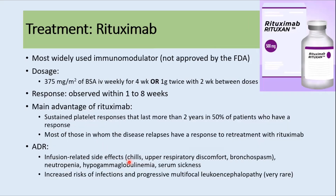Rituximab is the most widely used immunomodulator for second-line ITP treatment, though it is not FDA-approved for this indication. The dose is 375 mg/m² weekly for four weeks, or 1 gram twice with two weeks between doses. Response is usually observed within one to eight weeks, and a key advantage is that patients can have sustained response for more than two years. If a patient relapses on rituximab, retreatment usually produces a response again. Side effects include infusion-related reactions like chills or bronchospasm, neutropenia, serum sickness, increased risk of infections, and progressive multifocal leukoencephalopathy.